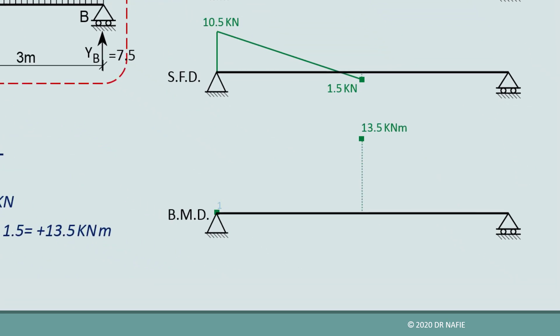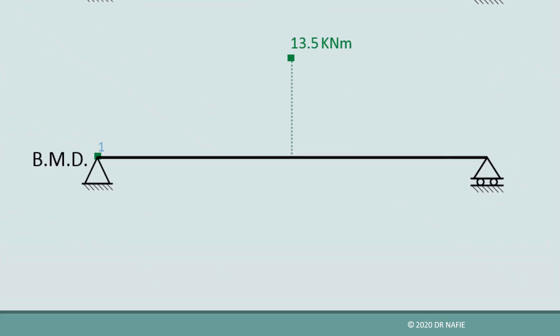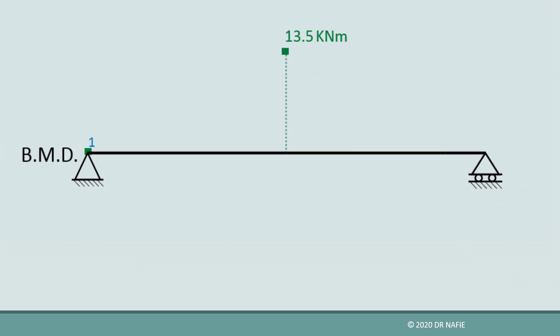Let us name the point that represents the moment at point A as point 1, and the point which represents the moment at point C as point 2. First, we will connect point 1 and point 2 using a straight line. This line is a construction line and does not represent the final diagram.